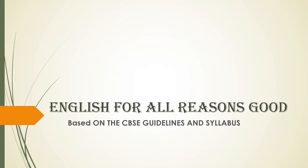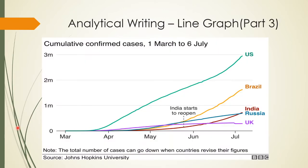Hi everyone, welcome to my channel English for All Reasons, based on the CBSC guidelines and syllabus. Today we are going to do an analytical paragraph based on a line graph. This is Part 3 — Part 1 dealt with the basics of analytical writing, Part 2 dealt with the bar chart, and this one is for the line graph. This is the most expected question for your board exams. The topic I've taken is a very recent one that deals with the coronavirus spread.